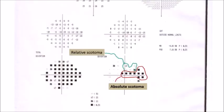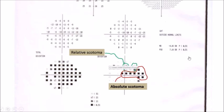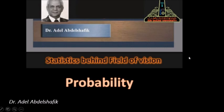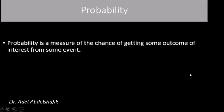People are accustomed to thinking of black points as being absolute scotoma, while these points are actually relative scotoma. This is not true. To understand this, let's go to the subject of probability. What is probability?